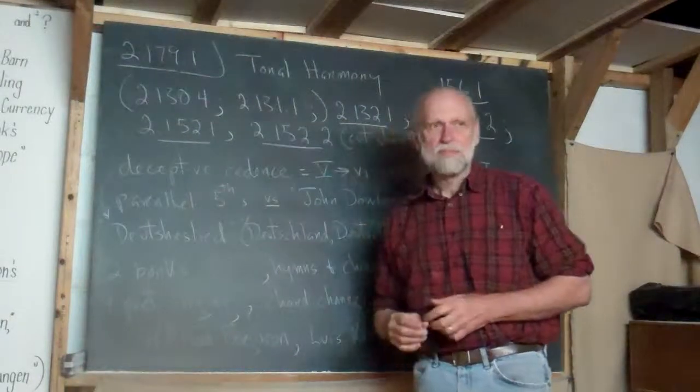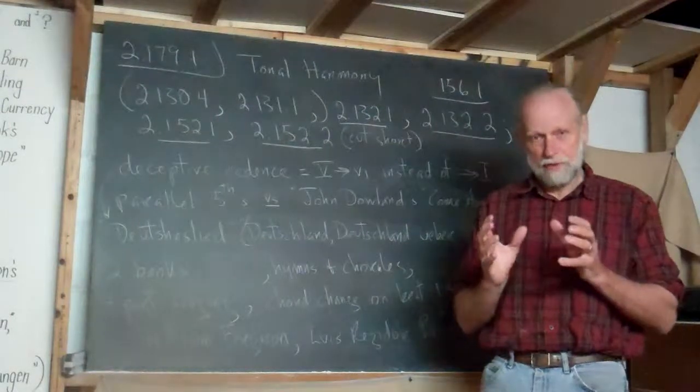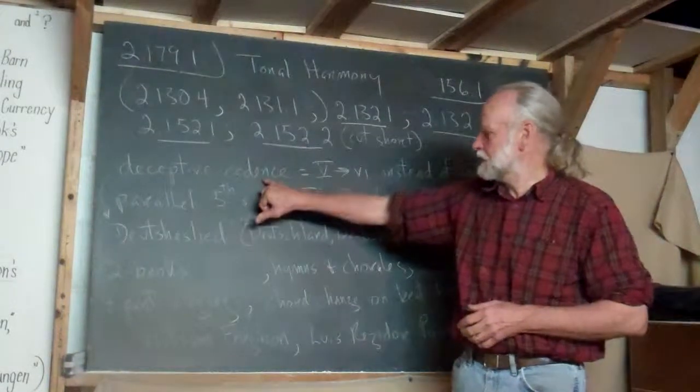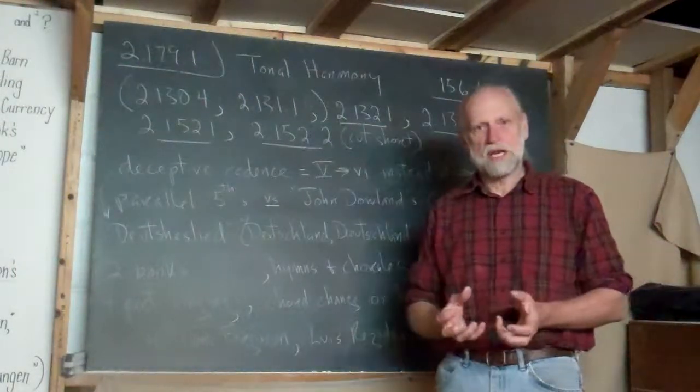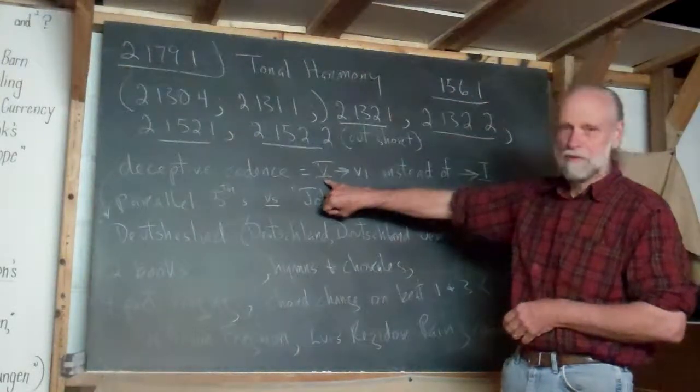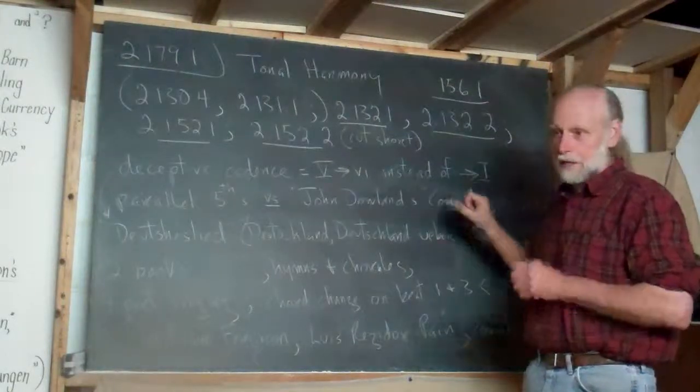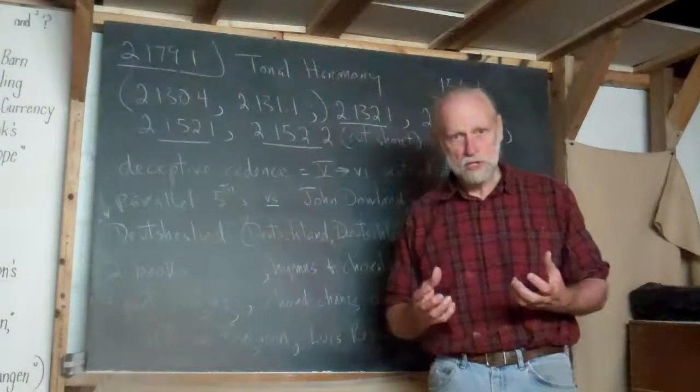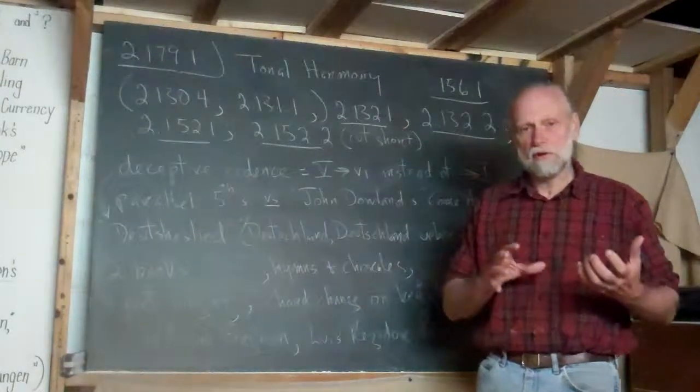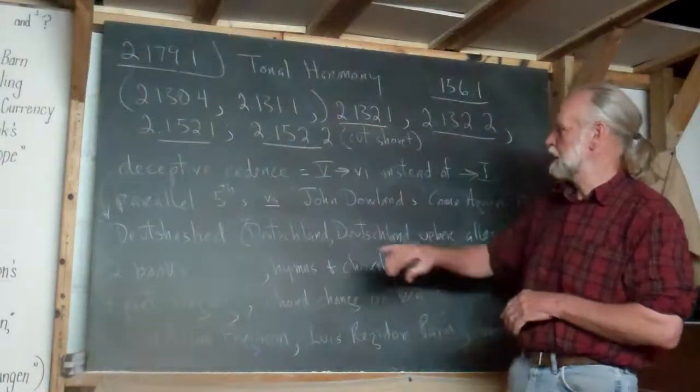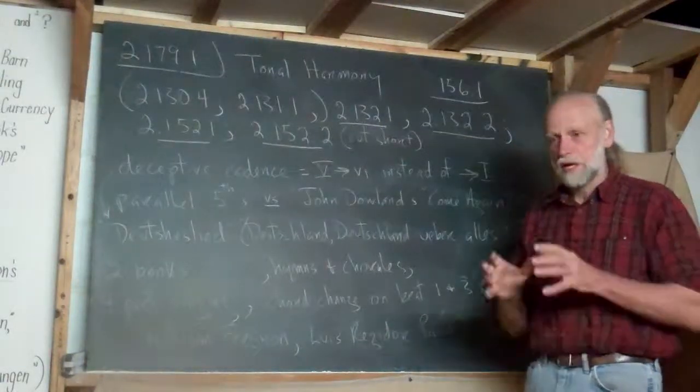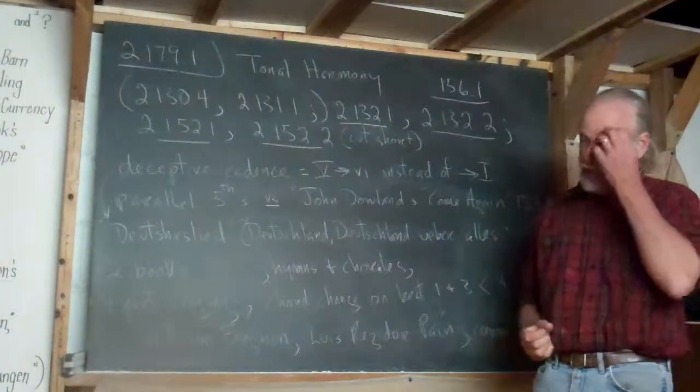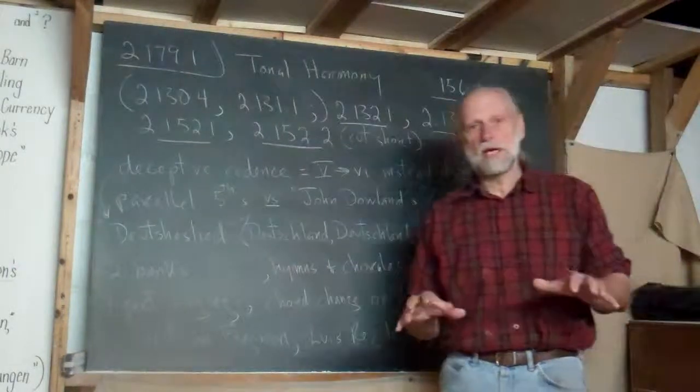First of all, a deceptive cadence. A cadence is when a song comes, the harmony of a song comes to a satisfying conclusion. You usually get that from going from a five chord to a one chord on the piano or on a guitar. A G, especially a G7, followed by a C major would give you a cadence. You've got to have at least two chords. Usually you have three. If you went F, G, C, then you would be going four, five, one in the key of C major. That would be a satisfying cadence.